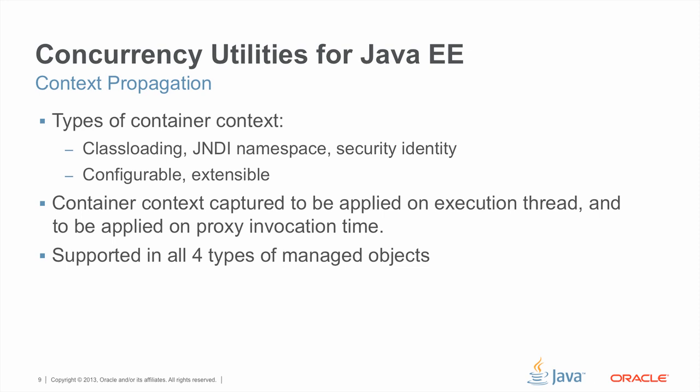The types of container contexts propagated for each managed object are configurable, typically done as part of managed object configuration by an administrator. The types of container contexts are not restricted to only the three listed; the Concurrency EE spec allows Java EE containers to support propagation of additional context types. However, class loading, JNDI namespace, and security identity are required to be supported and propagated in the default managed objects provided by Java EE containers.